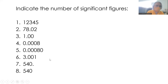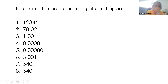So here we have these examples. One: 12345 — all non-zero digits, so all are significant; we have five significant figures. Two: 78.02 — the zero is between two non-zero digits; we have four significant figures. Three: 1.00 — the trailing zeros are to the right of the decimal point and both zeros are significant, so 1.00 has three significant figures. Four: 0.008 has only one significant figure, which is the number eight, because all zeros here are just placeholders and they are not significant.